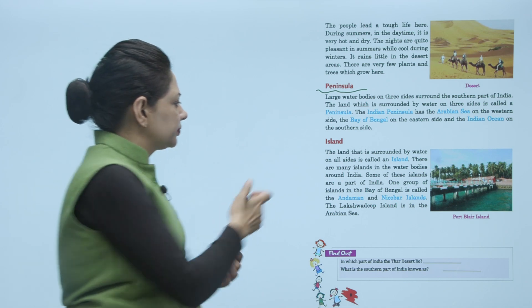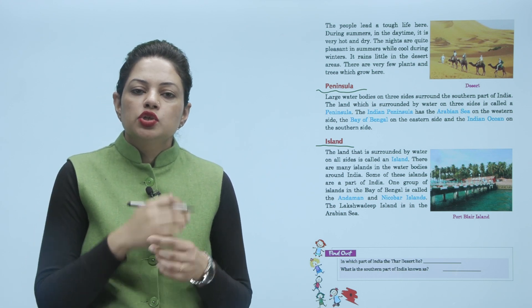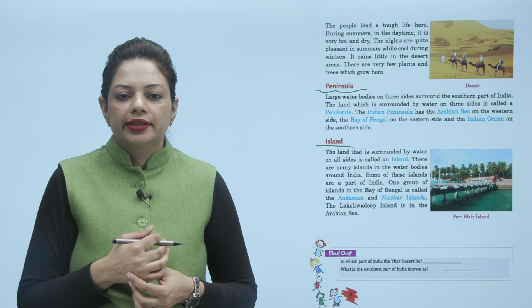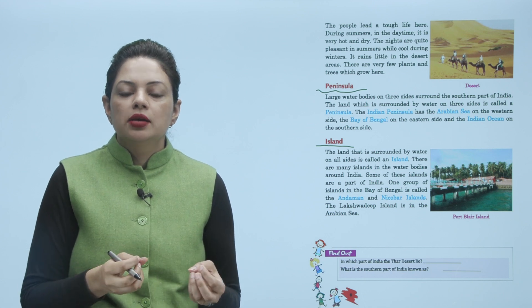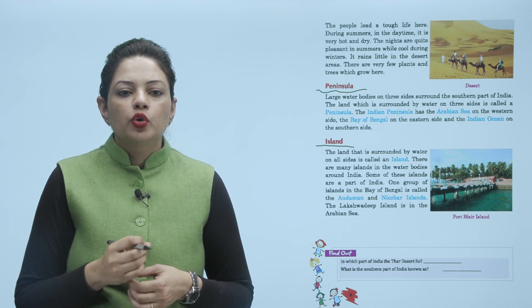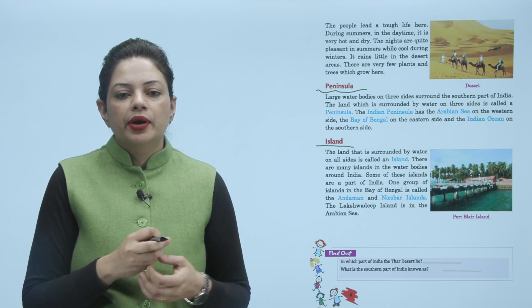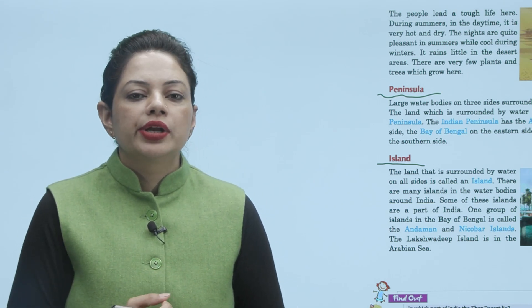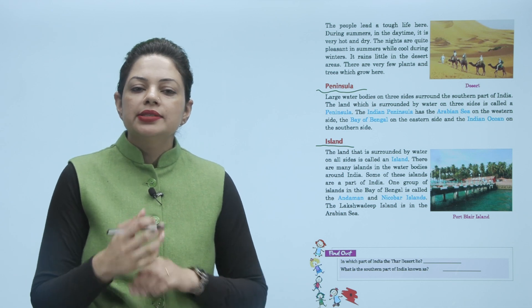The land that is surrounded by water on all sides is called an island. There are many islands in the water bodies around India, and some of these islands are a part of India. One group of islands in the Bay of Bengal is called the Andaman and Nicobar Islands. Another island group is the Lakshadweep Islands, located in the Arabian Sea.